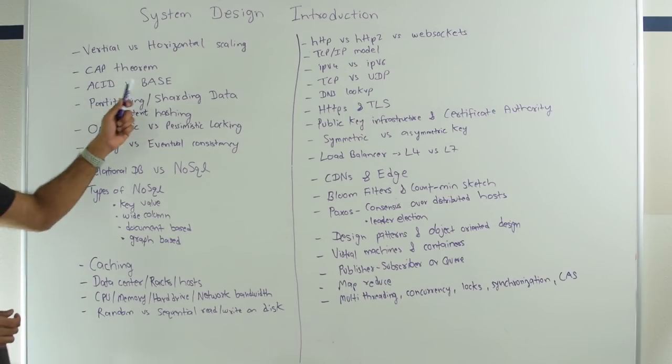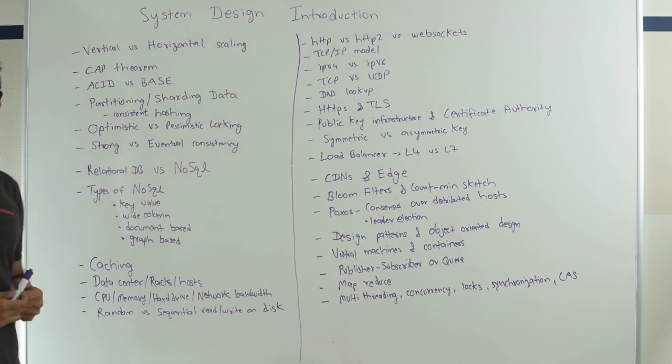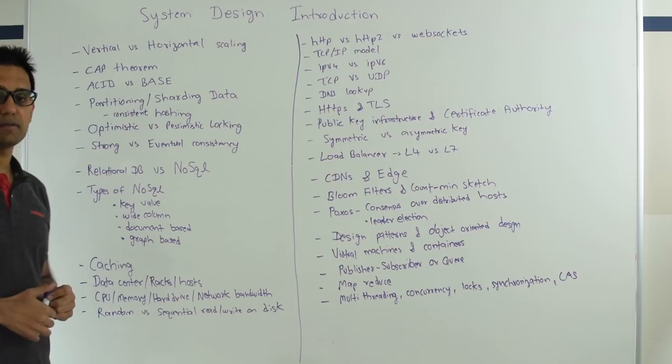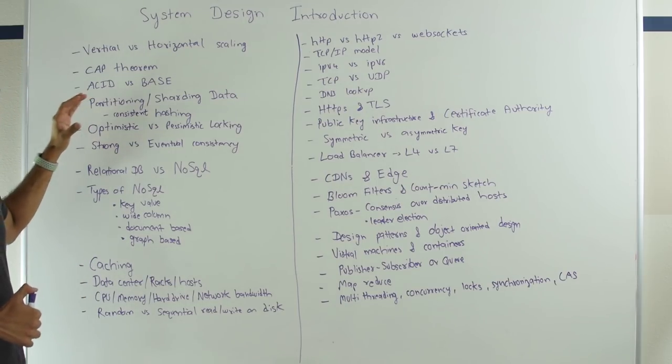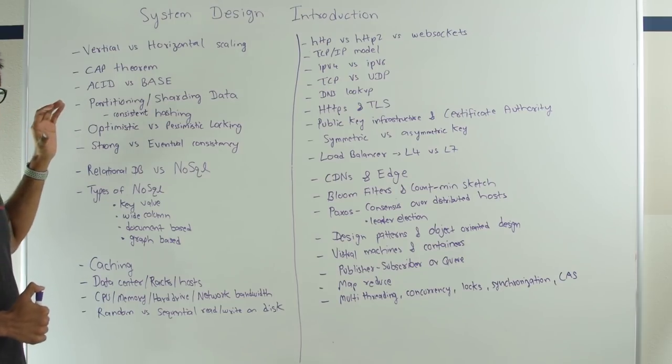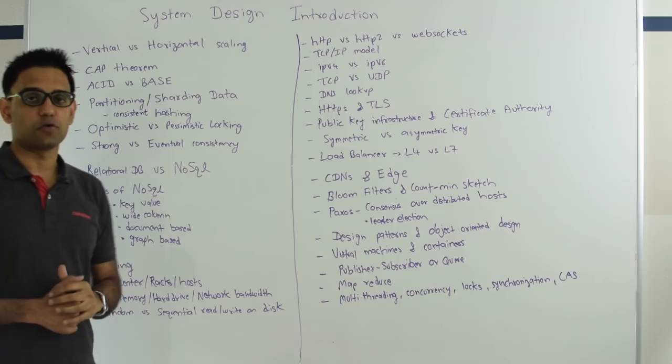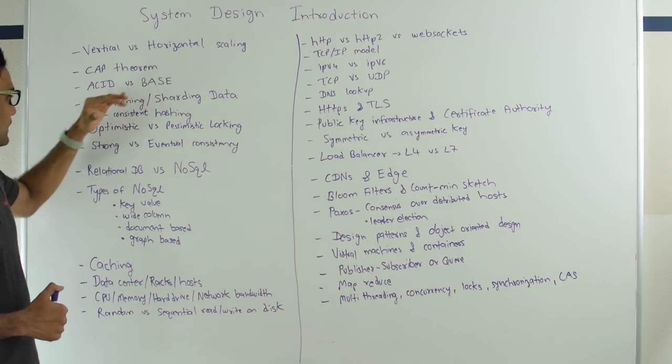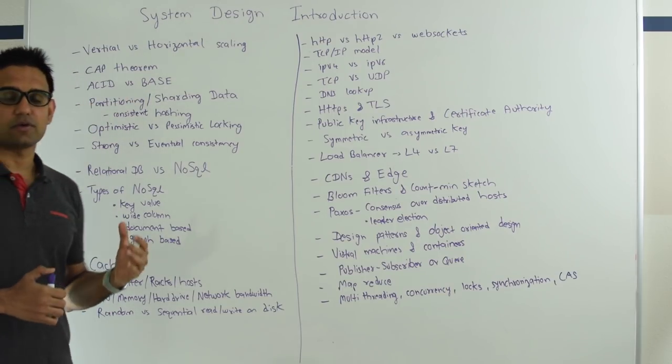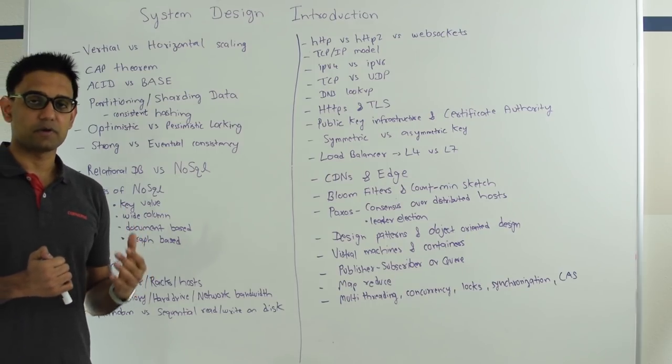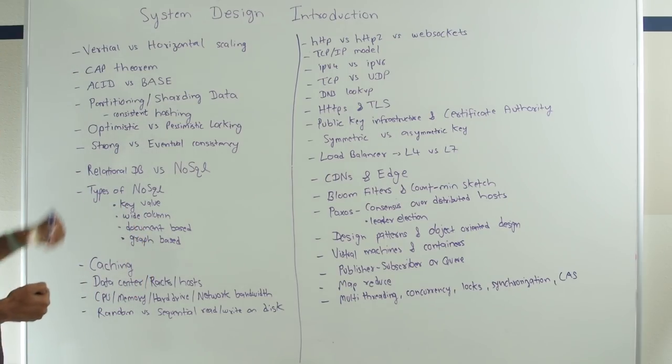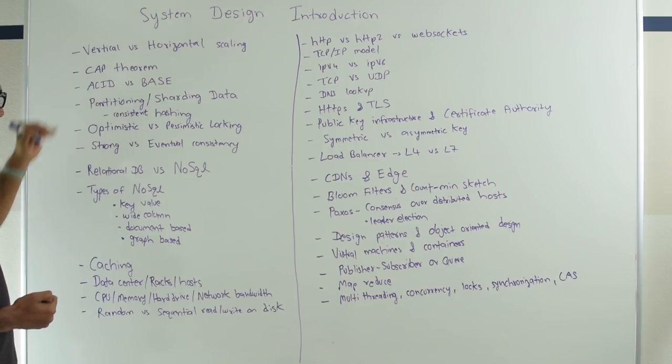Next up is ACID versus BASE. ACID stands for atomic, consistency, isolation and durability while BASE stands for basically available, soft state, eventual consistency. ACID is used more in terms of relational databases, traditional relational database while BASE is used more for NoSQL database. And you need to understand the differences because once you start using more NoSQL databases you need to understand which part of ACID properties you are willing to sacrifice.